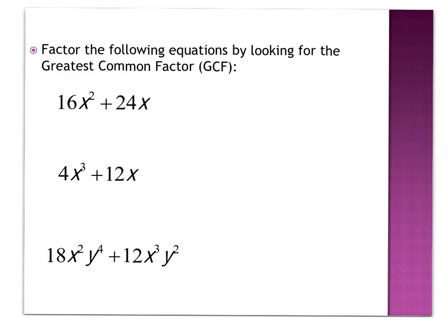Let's take a look at a skill that's very necessary to do well in the APA exam, and that's to factor equations by looking for the greatest common factor. The key here is the greatest factor. I'm going to try to factor this equation — sometimes I call it undistributing — because I'm going to use the distributive property backwards. Instead of taking a number out front and distributing it through the parentheses, I'm going to add parentheses and figure out what number goes out front.